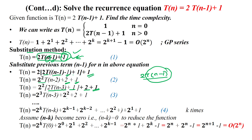So now we are getting the pattern: 2³ · T(n-3) + 2² + 2 + 1. When we repeat this k number of times, we get 2^k in place of 3, then T(n-k), then 2^(k-1) + 2^(k-2) + ... + 1.